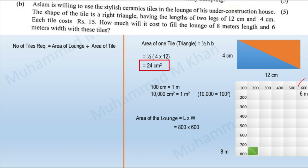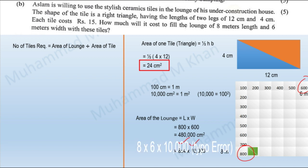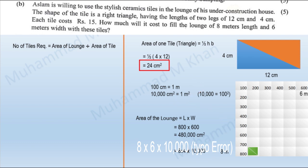In centimeters, the length of the lounge is 800 centimeters and its width is 600 centimeters. The product of 800 and 600 equals 480,000 centimeters square. Alternatively, if we don't convert 8 meters and 6 meters into centimeters, we multiply 8 by 6 and then by 10,000, which is the number of centimeter squares in one meter square. Either way, the result is 480,000 centimeter squares.